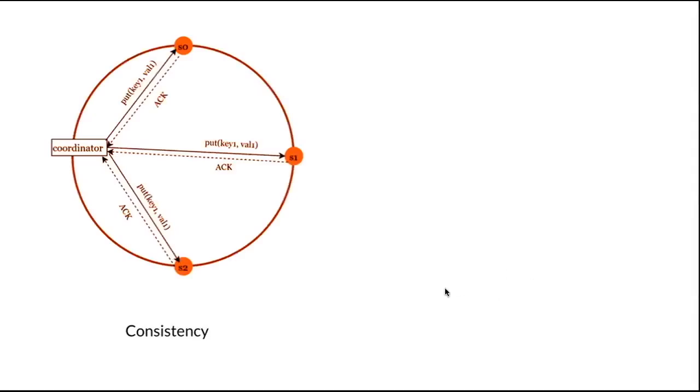Now we will talk about consistency in key-value stores. Since data is replicated at multiple nodes, it must be synchronized across replicas to ensure consistency. A quorum consensus can guarantee consistency for both read and write operations. Let's define the terms: N is the total number of replicas, W is the write quorum size — meaning a write operation must be acknowledged by W replicas to be considered successful, and R is the read quorum size — a read operation must wait for responses from at least R replicas.